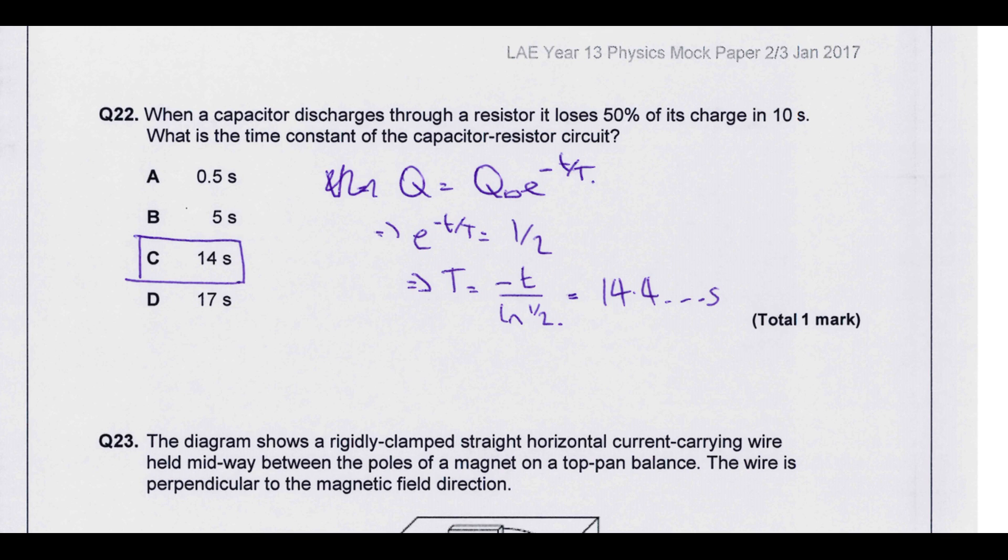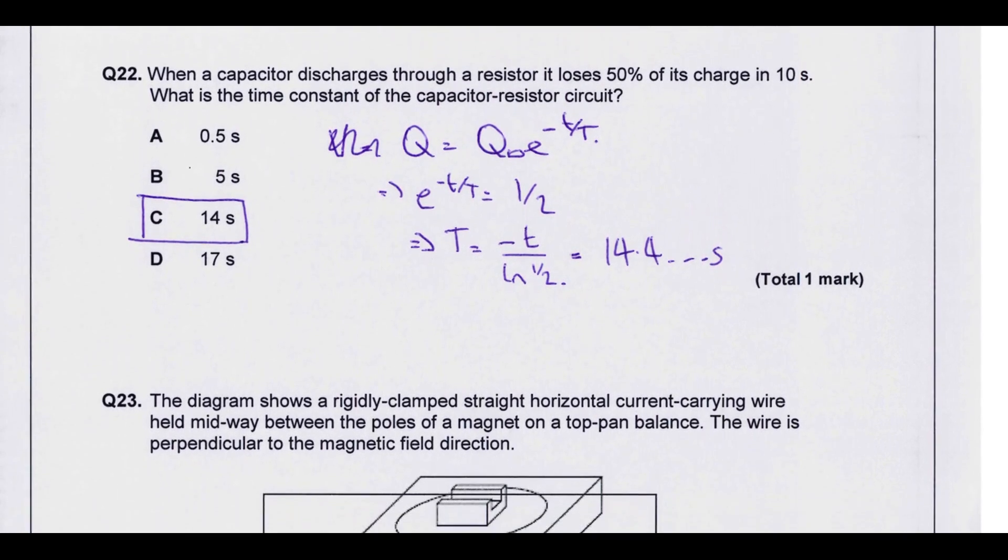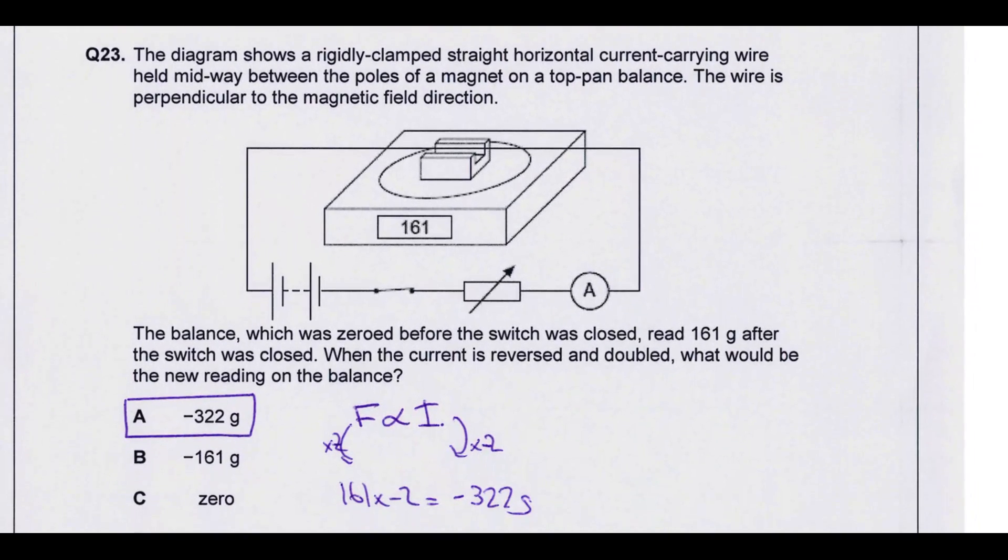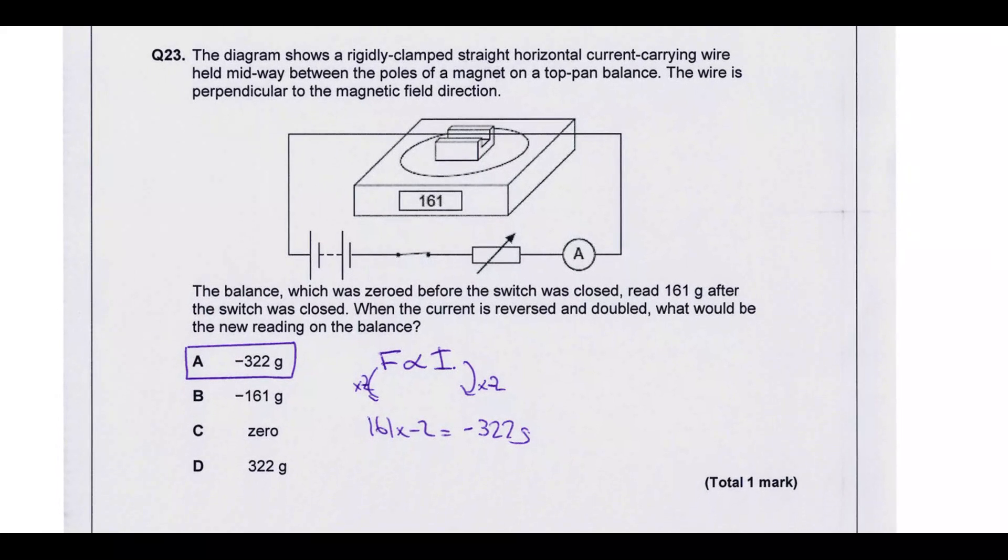When a capacitor discharges through a resistor, it loses 50% of its charge in 10 seconds. What is the time constant of the capacitor resistor circuit? This is the equation that governs a discharge here. So we know it's now at 50% of its charge. So we know that Q over Q₀ is equal to a half at this point. So then we need to take logs of both sides and rearrange to get just the time constant by itself. Plug your values in and it comes out as 14.4, so 14 seconds.